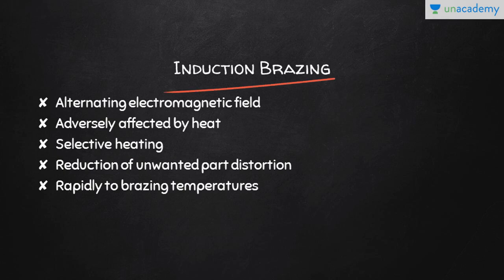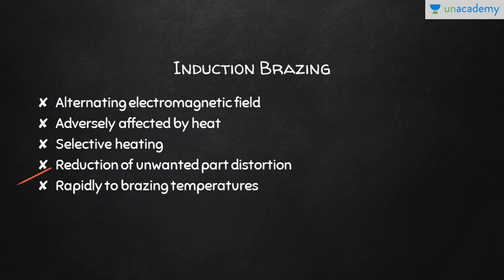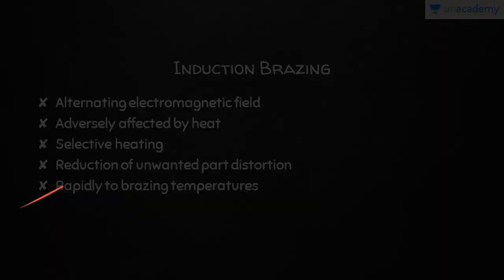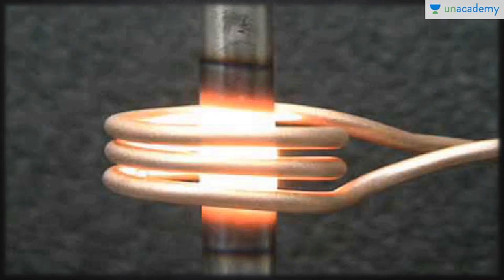Induction brazing utilizes an alternating electromagnetic field of high frequency for heating the workpieces together with the flux and filler material placed at the joint region. The technique is used only in applications where the entire assembly would be adversely affected by heat. Since the workpiece is heated selectively by the coil, induction brazing reduces unwanted thermal distortion and annealing. Induction heating brings the joint rapidly to brazing temperature. In induction brazing, the coils are wound around the brazing material.